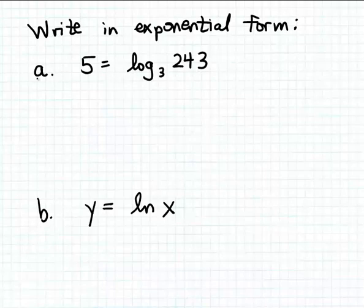Let's look at this equation in part A first. It tells us that 5 is equal to log base 3 of 243. So to rewrite this in exponential form, let's recall the basic definition of logarithms.